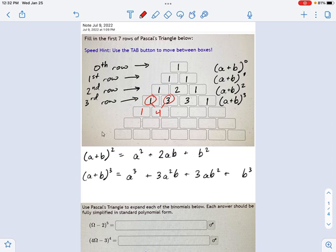1, the edges are always 1, but it would be 1, 4, 6, 4, 1. That would be my 4th row. And that's going to help me figure out A plus B to the 4th power. Okay, and I'll get to that in a moment.